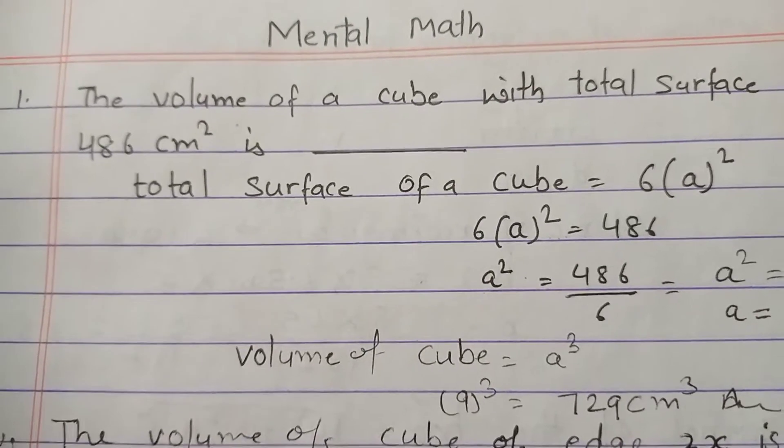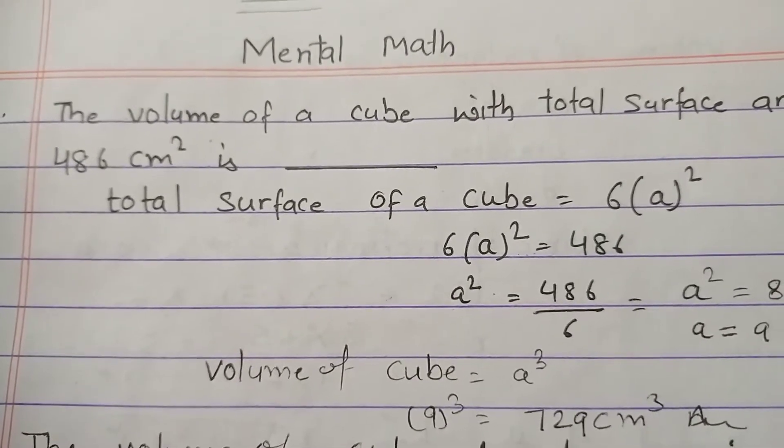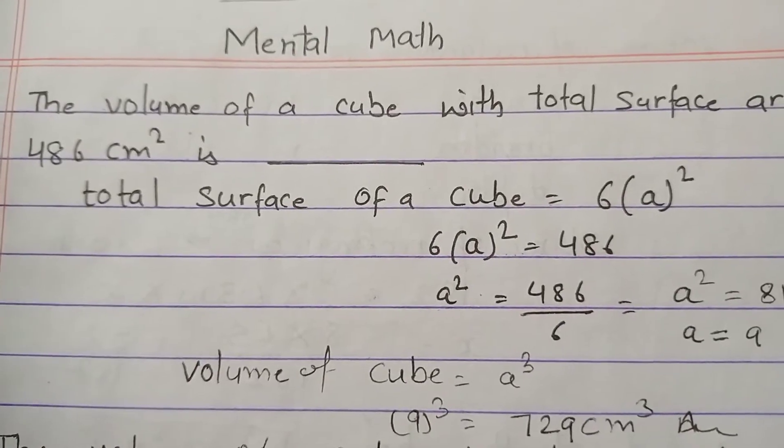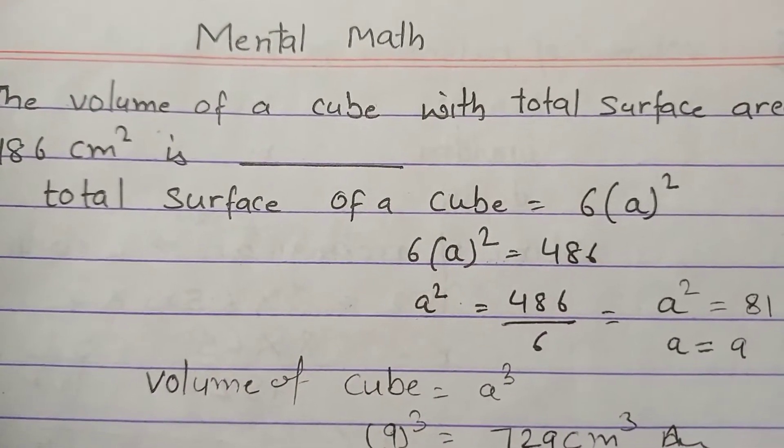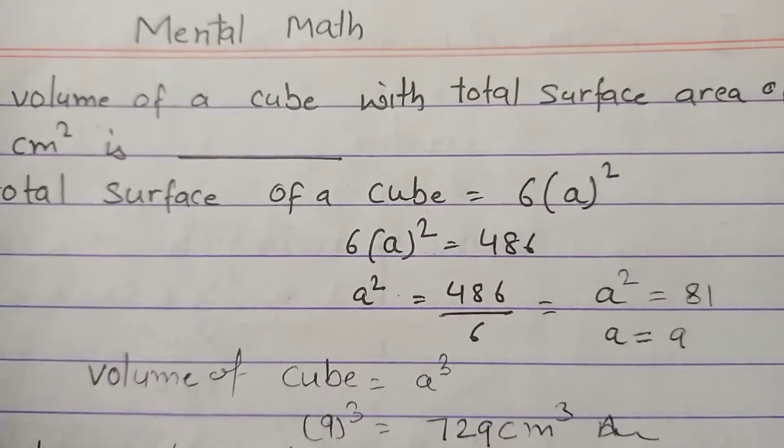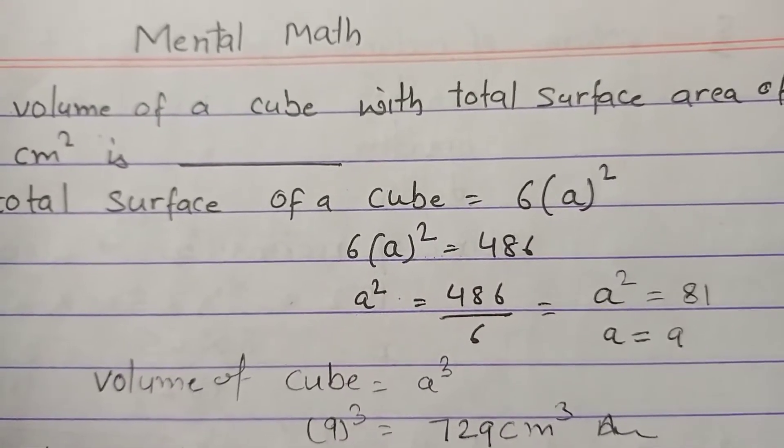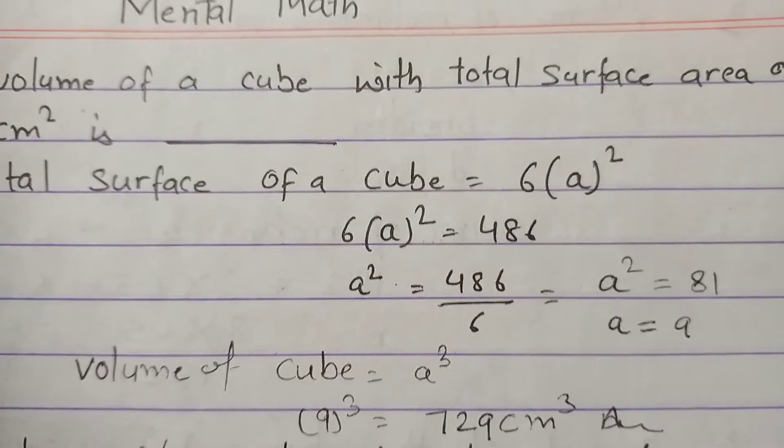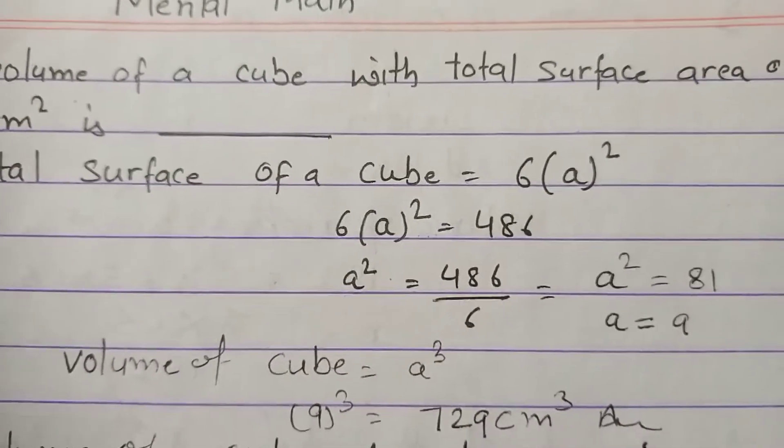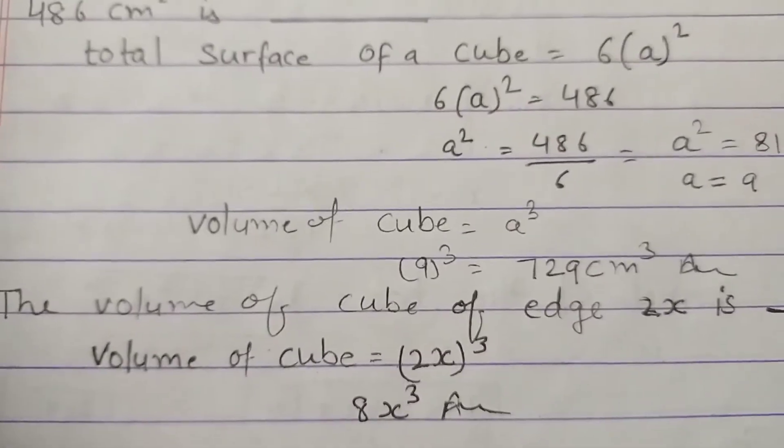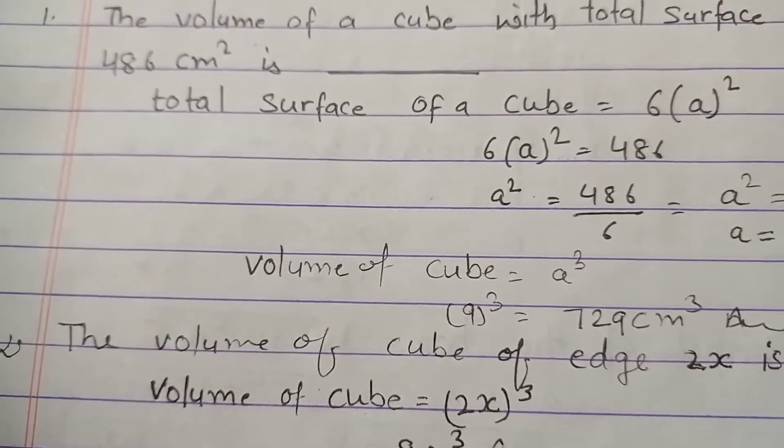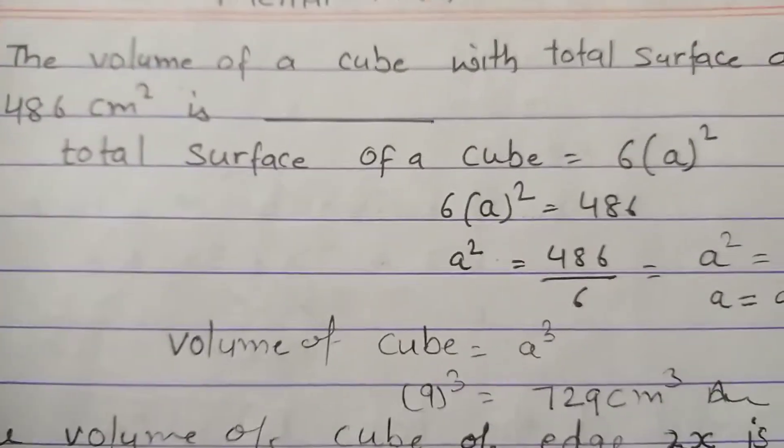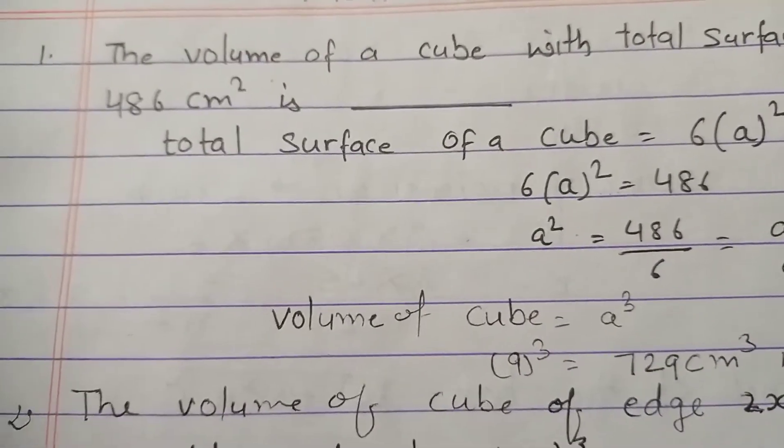Total surface area of a cube formula is 6a². So 6a² = 486, so a² = 486/6, which gives a² = 81. So a = 9. Volume of cube is a³, so 9³ = 729 centimeter cube. So the answer is 729 centimeter cube.